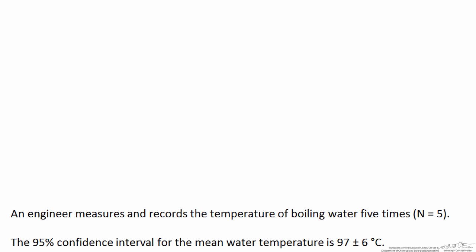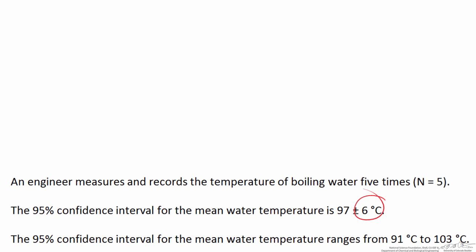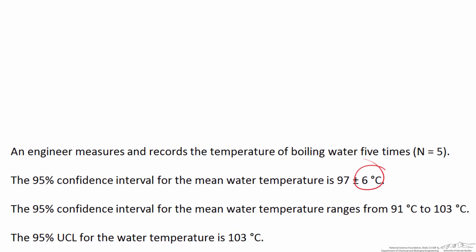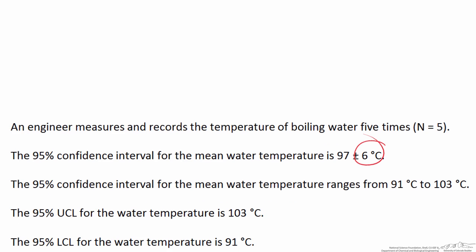What does this plus or minus 6 degrees C mean? We might see it in a different form. It could be reported the 95% confidence interval for the mean water temperature ranges from 91 to 103 degrees C. Or you might see it, the 95% UCL stands for the upper confidence limit for the water temperature is 103, or the 95% LCL is 91 degrees C.